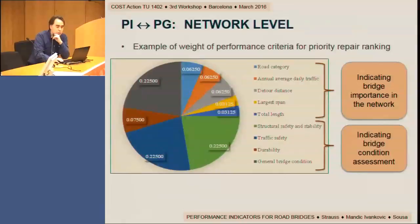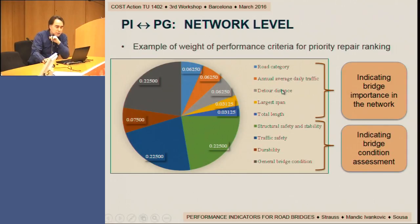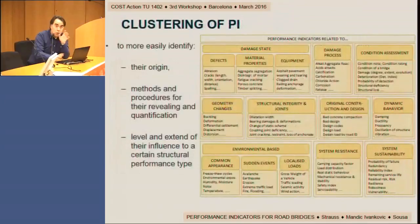At the network level, the most important aspect is to prioritize repair ranking based on bridge importance in the network, mainly using five criteria: road category, annual average daily traffic, detour distance, largest span, and total length. This is also related to bridge condition assessment, which is based on four criteria: structural safety and stability, traffic safety, durability, and general bridge condition.